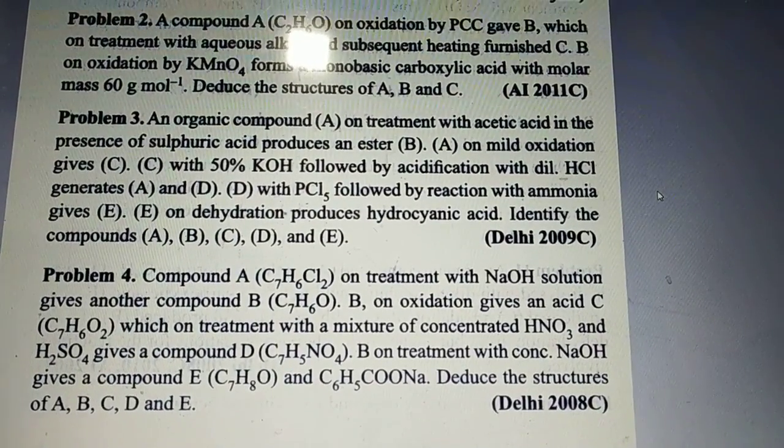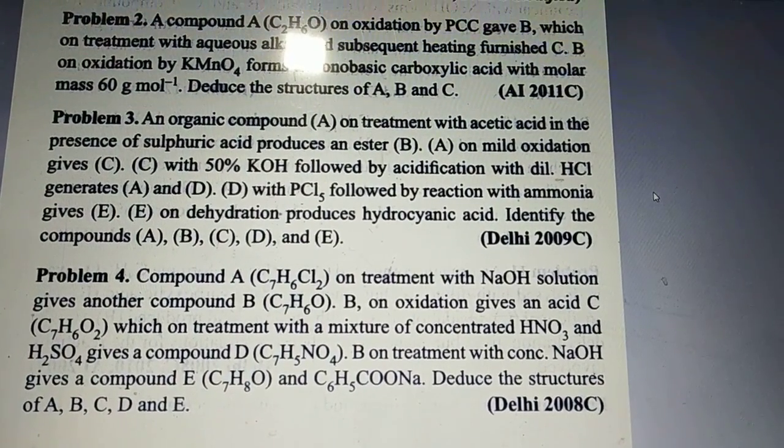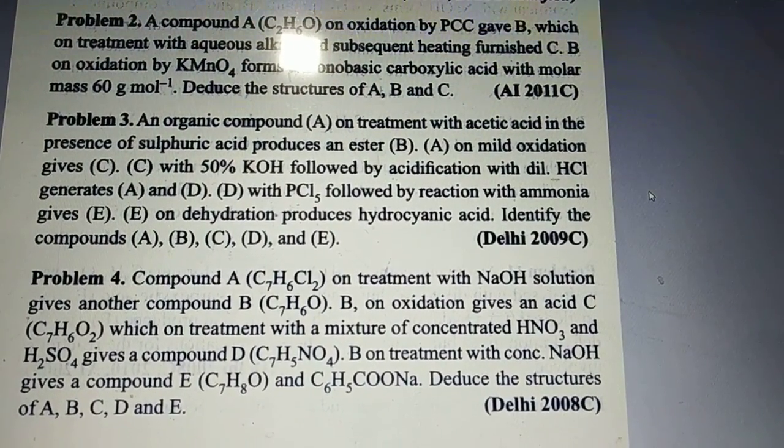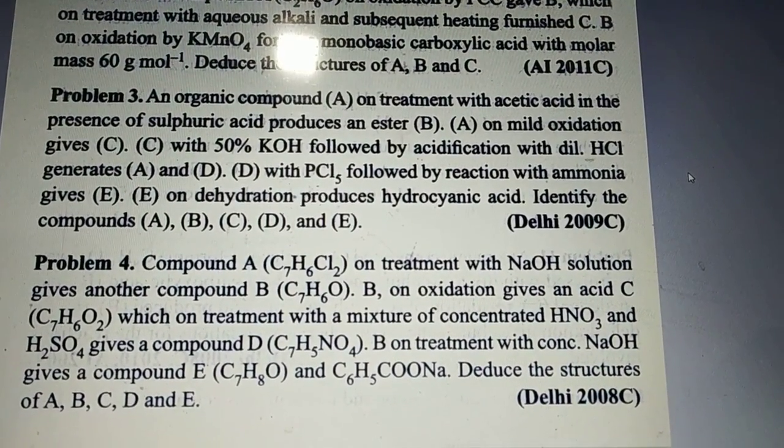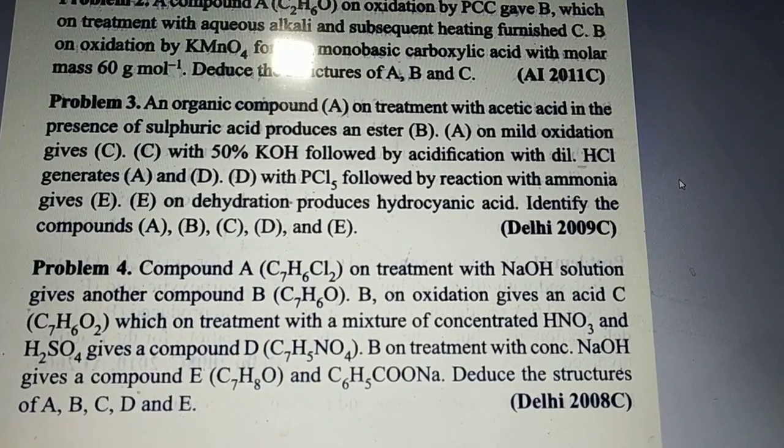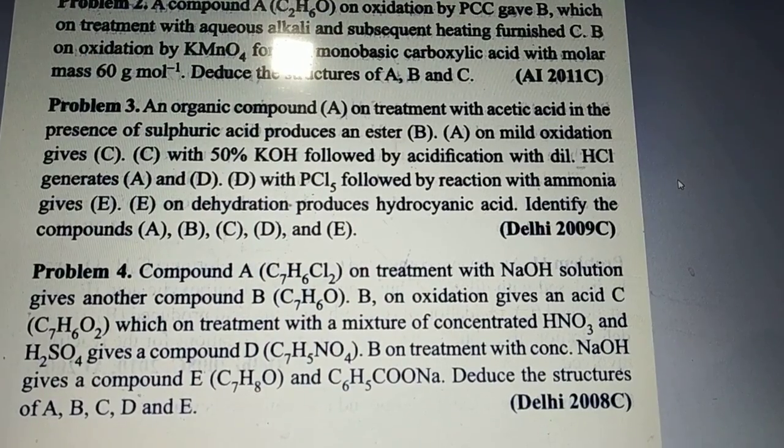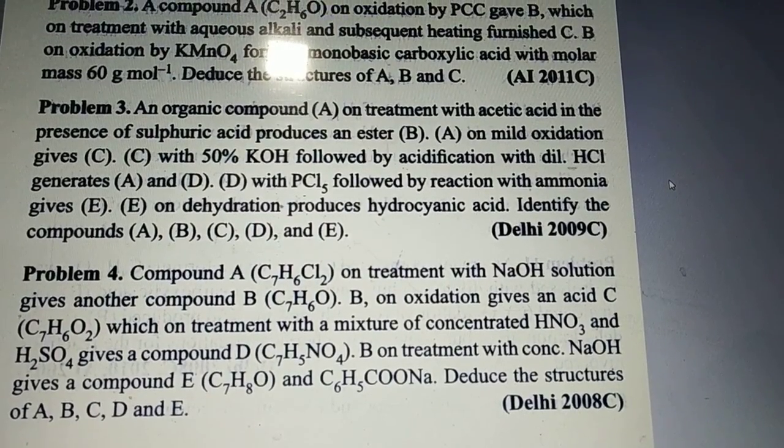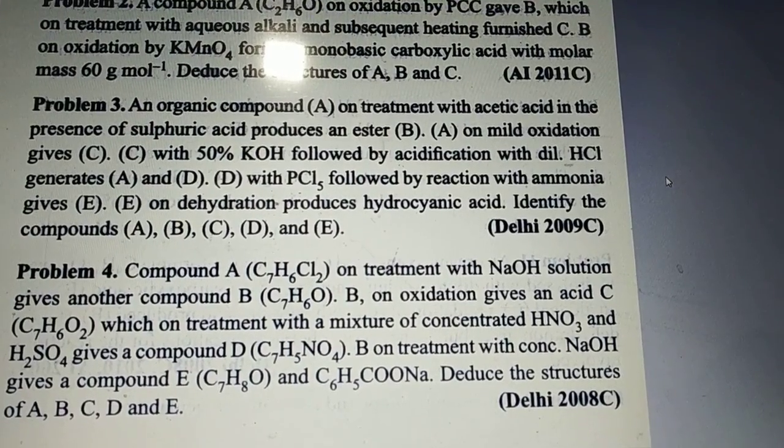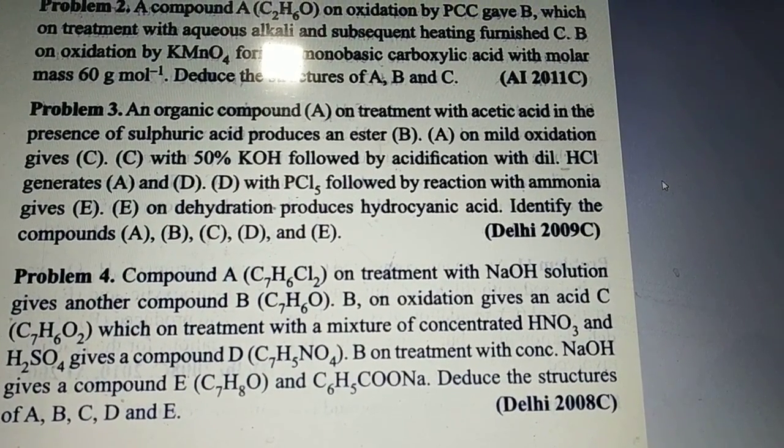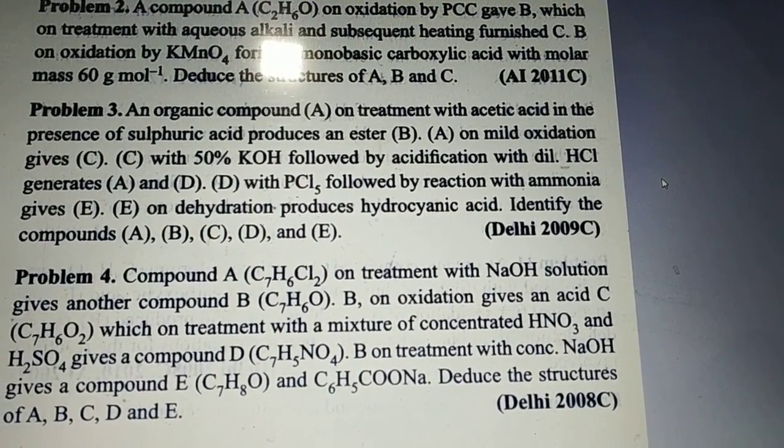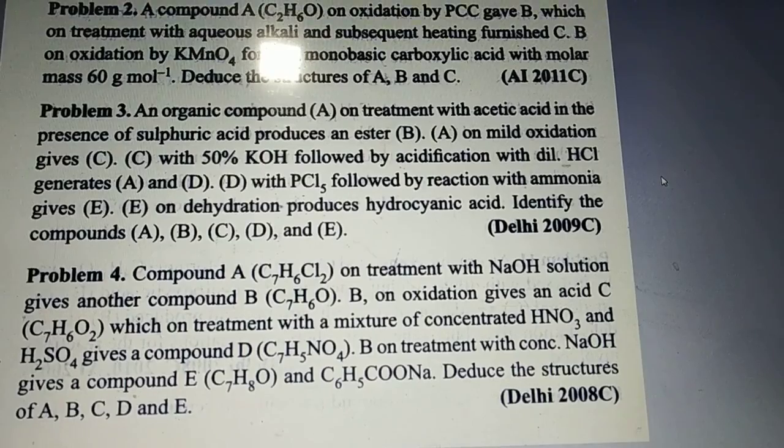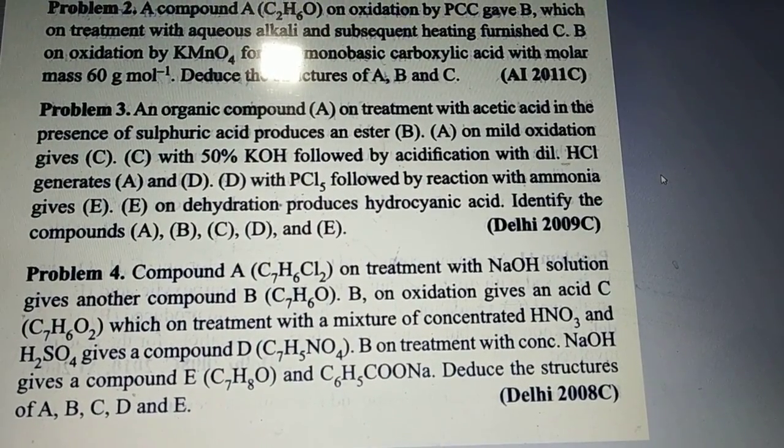Here you have a statement given: compound A whose molecular formula is C7H6Cl2 on treatment with NaOH solution gives another compound B that is C7H6O. B on oxidation gives C, an acid with molecular formula C7H6O2 which on treatment with mixture of concentrated HNO3 and H2SO4 means nitration gives compound D with formula C7H5NO4. B on treatment with concentrated NaOH gives compound E that is C7H8O and C6H5COONa.